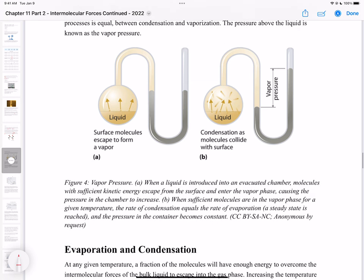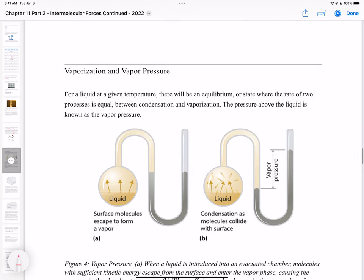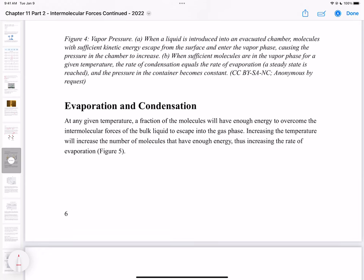Eventually you reach a state where evaporation equals condensation. At any given temperature, you'll have a fraction of molecules that have enough energy to overcome the intermolecular forces and escape into the gas phase. Increasing temperature increases the number of molecules with enough energy, increasing the rate of evaporation until you reach the boiling point, where it will continuously boil until there's no liquid left. Vapor pressure depends on intermolecular forces and temperature. Let's stop there and pick up in the next video.